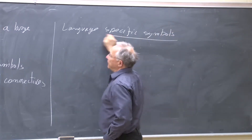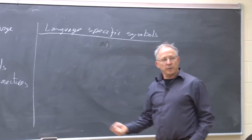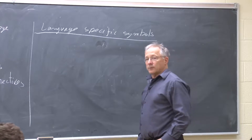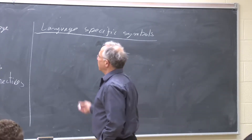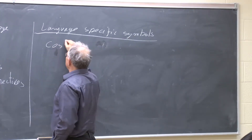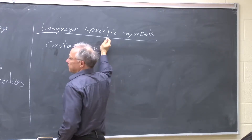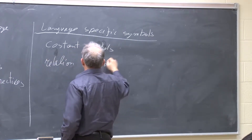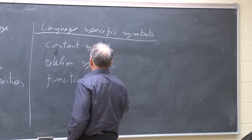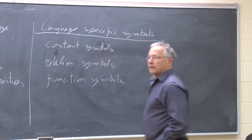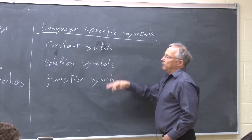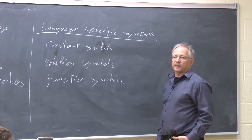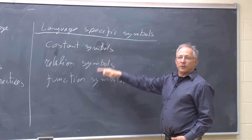The other thing common to all the logics we'll discuss is the notion of equality — a way of saying that two objects are the same object. For example, 'my oldest daughter' and the name 'Leo' refer to the same object. We want to be able to express that. Equality plays a special role, as we will see. Then we have language-specific symbols, which are going to be of three types: constant symbols, relation symbols, and function symbols.